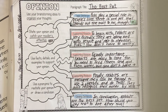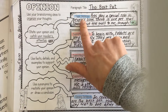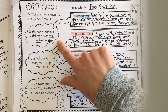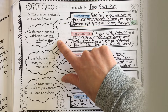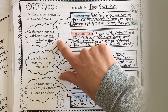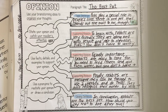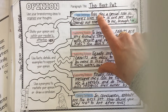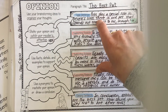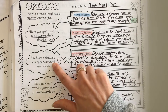First, your topic sentence needs to catch your reader's attention — introduce what you're talking about and provide some kind of hook. What's going to draw your reader in and capture their attention so they want to keep reading and possibly agree with your opinion? After that, you need to be sure to state your opinion. I put those together in my topic sentence box.